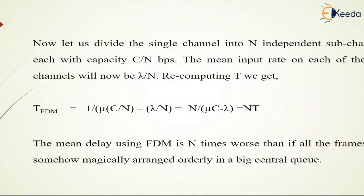The mean delay using FDM is N times worse than if all the frames were somehow magically arranged orderly in a big central queue.